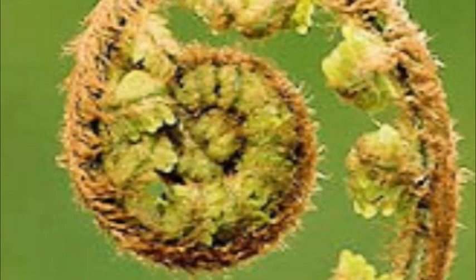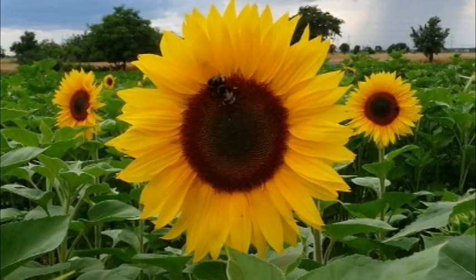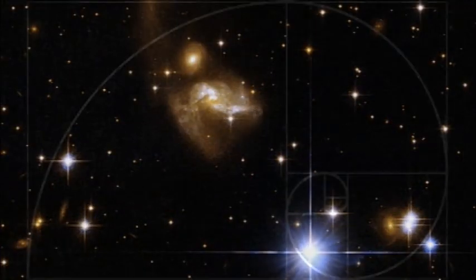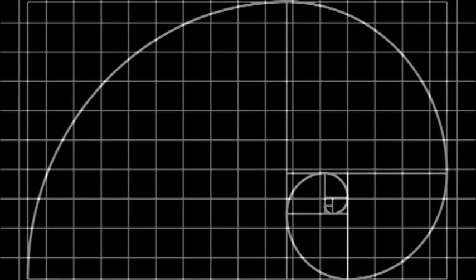Nature uses this extraordinarily simple number sequence to construct so many of her forms — everything from galaxies to sunflowers. And now I'm going to show you how this number sequence translates into actual physical geometry. If you're just starting out, it's best to begin with a surface like graph paper.